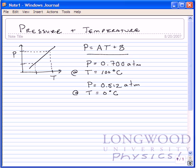And to do that, we use this equation. Let's start with this one here. We plug this into our equation so that we have 0.7 atm is equal to A times the temperature of 100 degrees Celsius plus B.